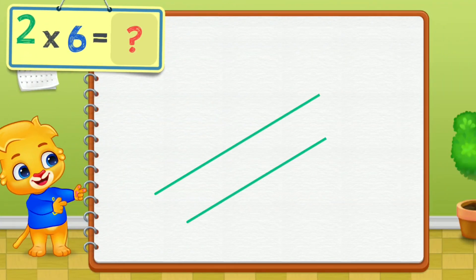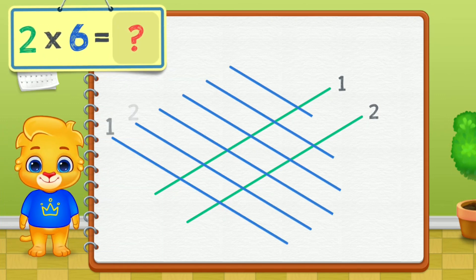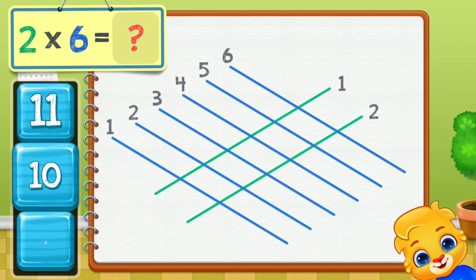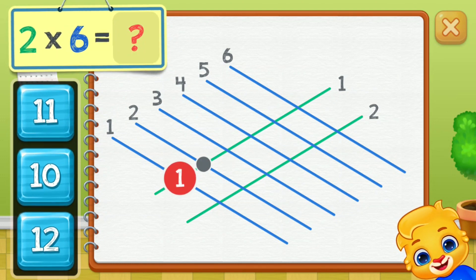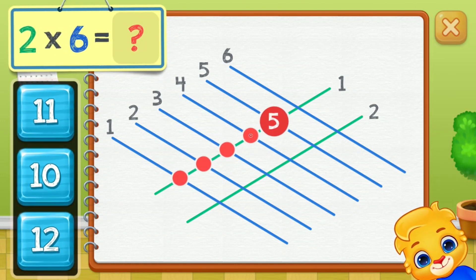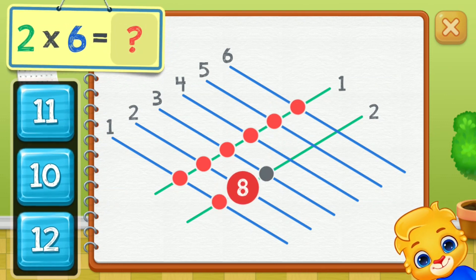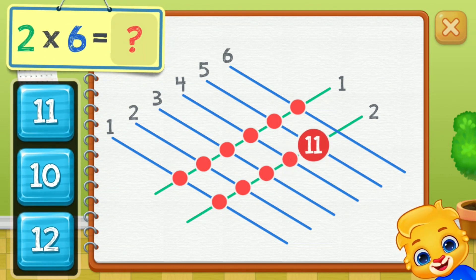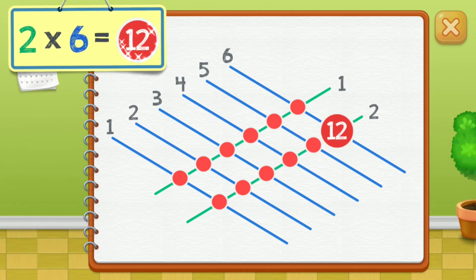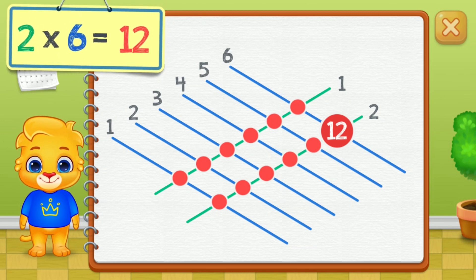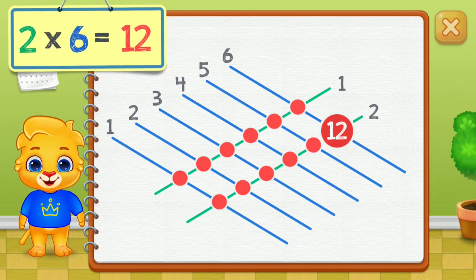Two times six equals... one, two, three, four, five, six, seven, eight, nine, ten, eleven, twelve. Two times six equals twelve.